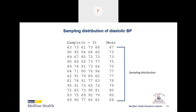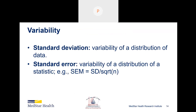A sampling distribution is a distribution of statistics — a mean, a proportion, or an odds ratio — not a distribution of the data itself. When we talk about variability in a distribution of data, we calculate the standard deviation. The standard error, however, is the variability of a distribution of a statistic, such as the mean. The standard error of a mean is the sample standard deviation divided by the square root of the sample size N. So the standard error is dependent on sample size, which makes a big difference in what we can say about our sample.